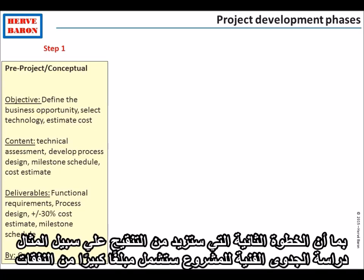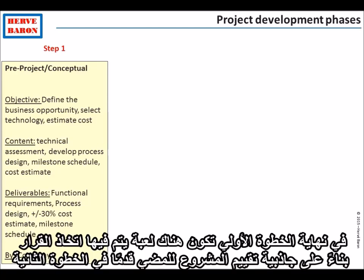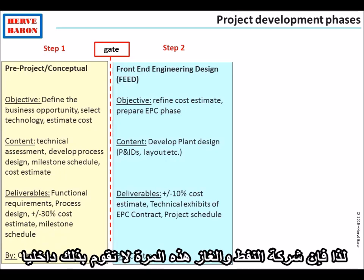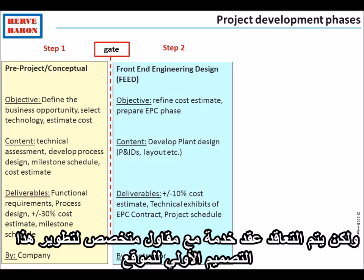Since step two, which will further refine the technical feasibility of the project, will involve a significant amount of expense, at the end of step one there is a gate where the decision is taken — based on the assessed attractiveness of the project — whether to proceed to step two or not. Step two is called the Front End Engineering Design. It involves a specialist contractor, so this time the oil and gas company does not do this internally but enters into a service contract with a contractor specialized to develop such preliminary plant design.